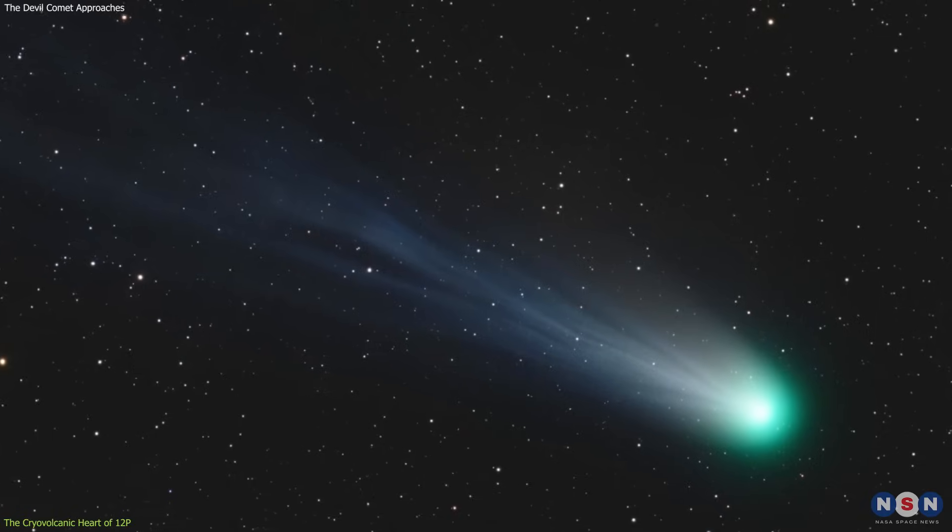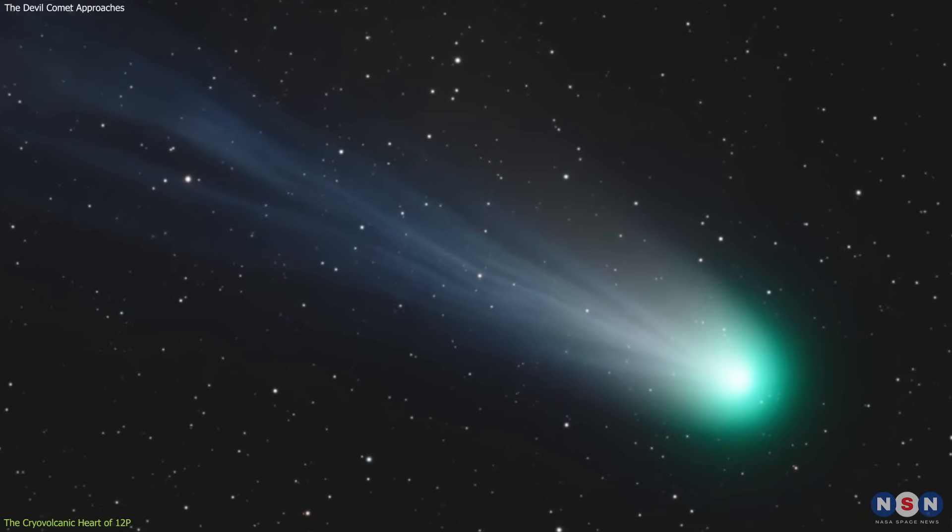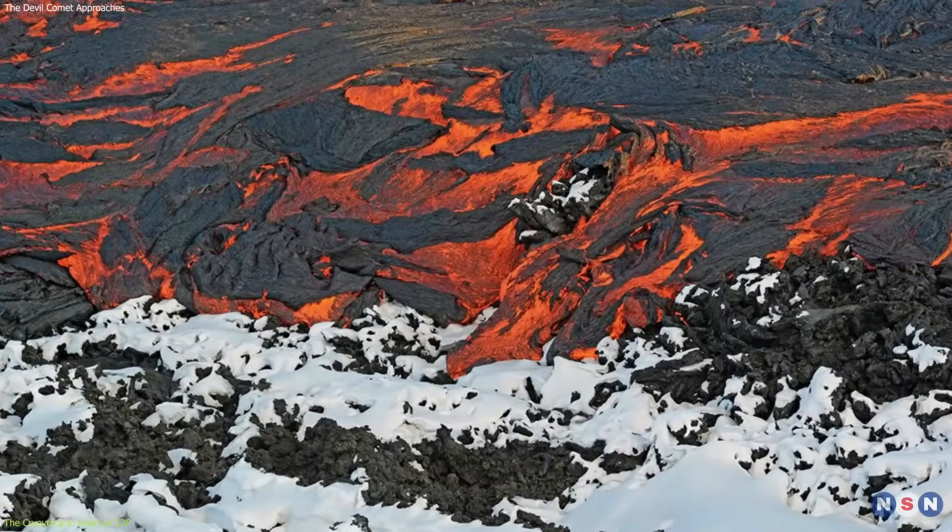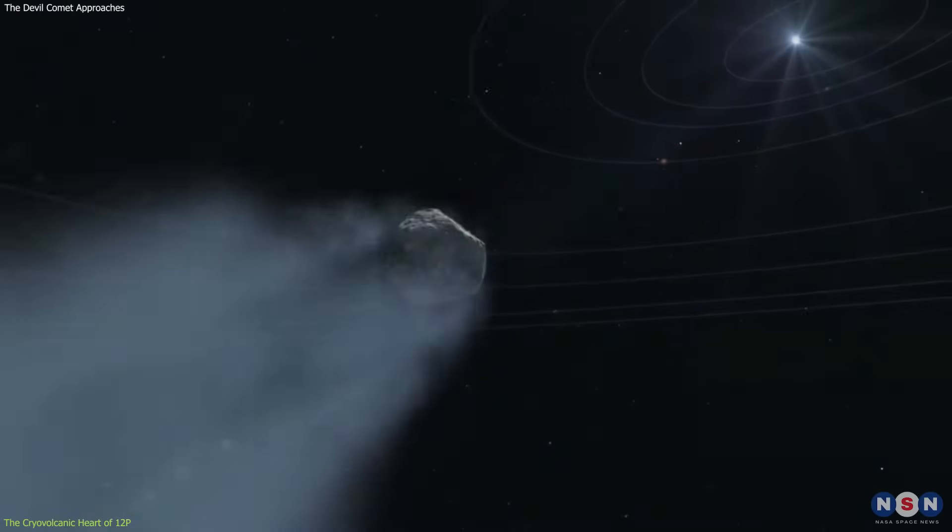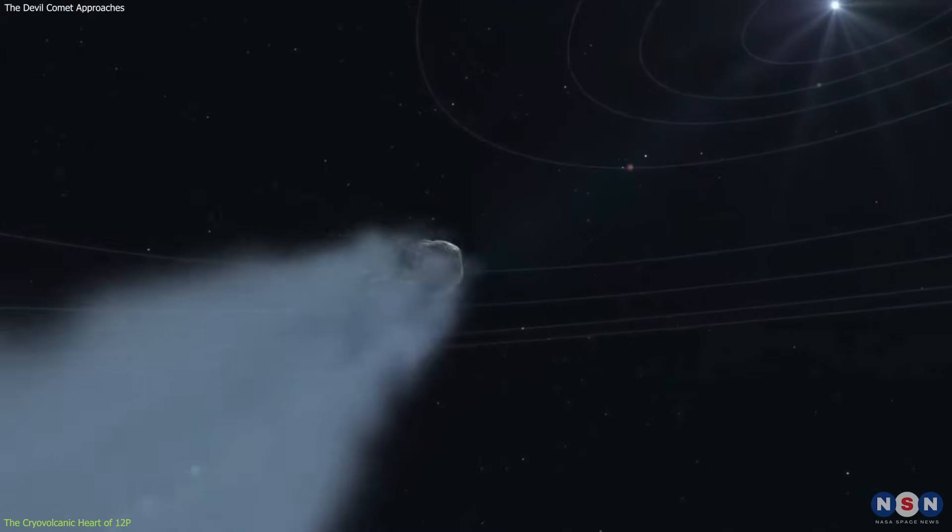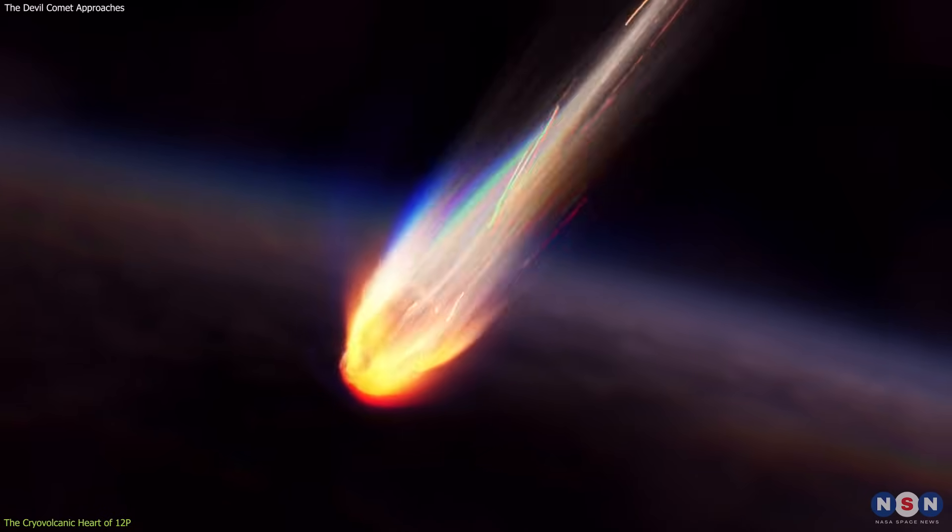However, what truly sets it apart from its cosmic counterparts is its cryovolcanic nature. Imagine a world where ice behaves like lava. This is the reality for Comet 12P. As it journeys through the vast expanse of space, solar radiation bombards its surface, creating fissures in its nucleus.